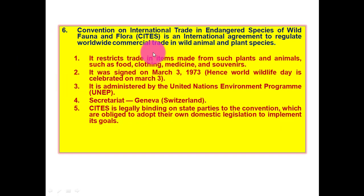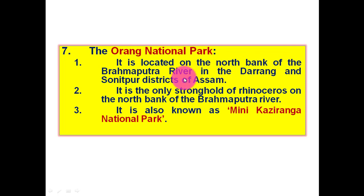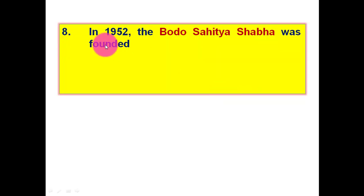Next, Orang National Park: it is located on the north bank of the Brahmaputra River in the Darrang and Sonitpur districts of Assam. It is the only stronghold of rhinoceros on the north bank of the Brahmaputra River. It is also known as Mini Kaziranga National Park.